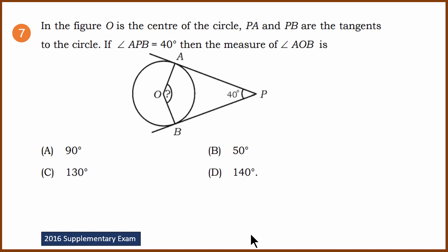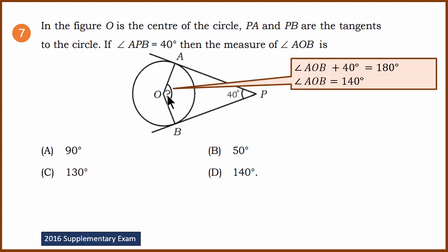Seventh question — a very similar question. PA and PB are tangents to the circle. If angle APB is 40 degrees, find angle AOB. As we saw previously, the two angles must add up to 180 degrees. So AOB plus 40 degrees equals 180 degrees, therefore AOB is 140 degrees. This is from the 2016 supplementary exam.